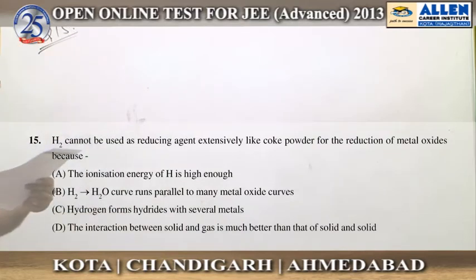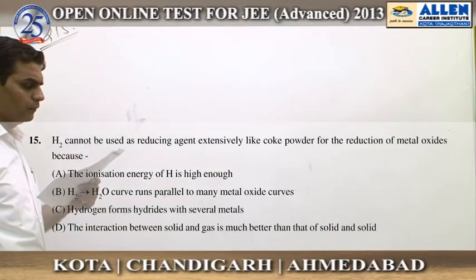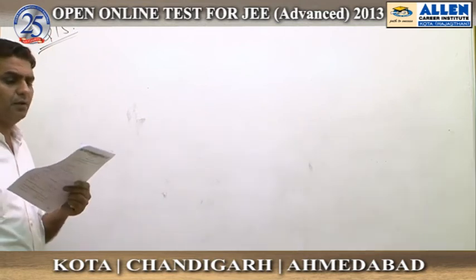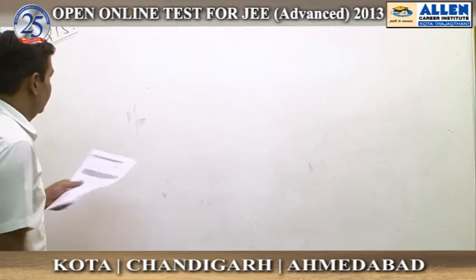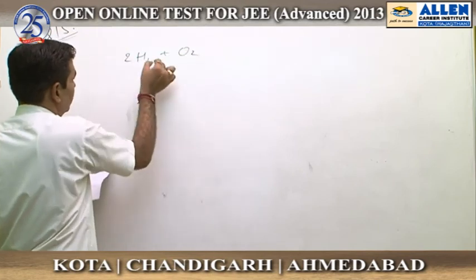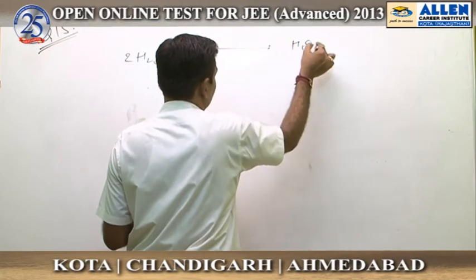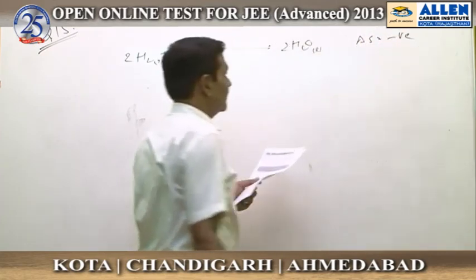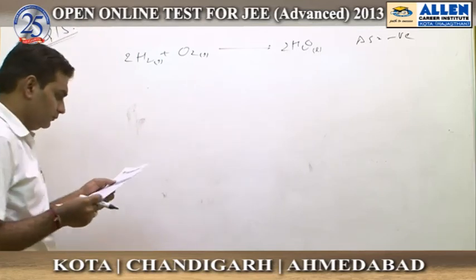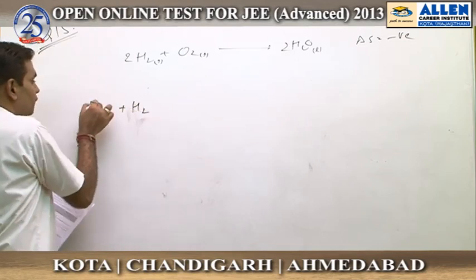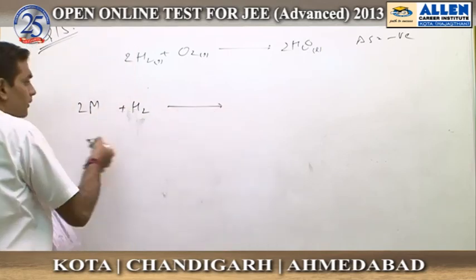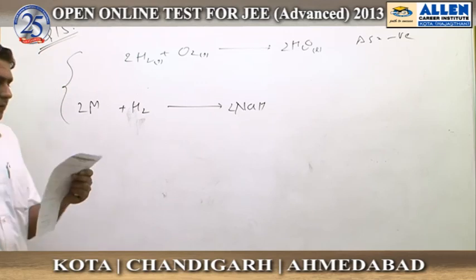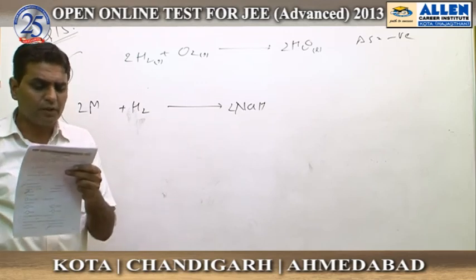Question number 15: H2 cannot be used as a reducing agent extensively like coke for the reduction of metal oxides. There are two basic reasons: first, the reaction H2(g) + (1/2)O2(g) → H2O(l) has a negative ΔS, so entropy does not support the reaction spontaneously at high temperatures. Second, many metals have a tendency to form hydrides — for example, sodium forms NaH with hydrogen, and other metals form interstitial hydrides — making hydrogen an ineffective reducing agent in metallurgy.